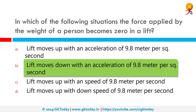In physics, apparent weight is a property of objects that corresponds to how heavy an object is. The apparent weight of an object will differ from its actual weight whenever the force of gravity acting on the object is not balanced by an equal but opposite normal force. This is why it happens in an elevator — the elevator is also moving in the direction of gravity, which is why the weight of the person inside cancels out and becomes zero.